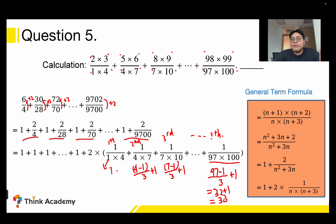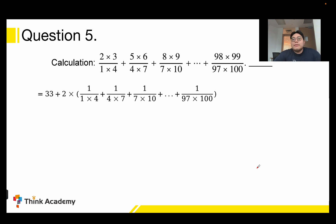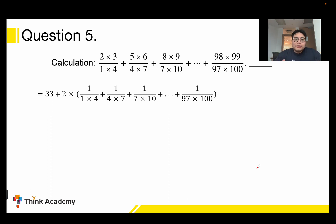So we can rewrite the expression as: 33 + 2 × (1/(1×4) + 1/(4×7) + ... + 1/(97×100)). As we found in previous lessons, we can use the method of differences to separate this kind of fraction.